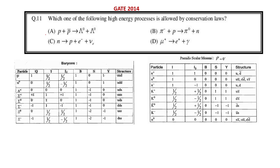Hello everyone, today I will be discussing question number 11 from GATE 2014. In this question, four reactions are given and we need to answer which one will be allowed — either A, B, C, or D. We will look at each reaction one by one.